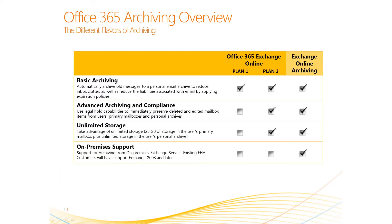There are three different flavors of archiving with Office 365. The first is Exchange Online Plan 1, which includes basic archiving for customers that want to store old messages to a personal email archive to reduce email clutter. Exchange Online Plan 2 as well as Exchange Online Archiving have richer functionality around advanced archiving and compliance, as well as unlimited storage to provide more than 25 gigs of storage for end users. Exchange Online Archiving additionally has on-premises support for organizations that want an on-premises primary mailbox with a cloud-based email archive.